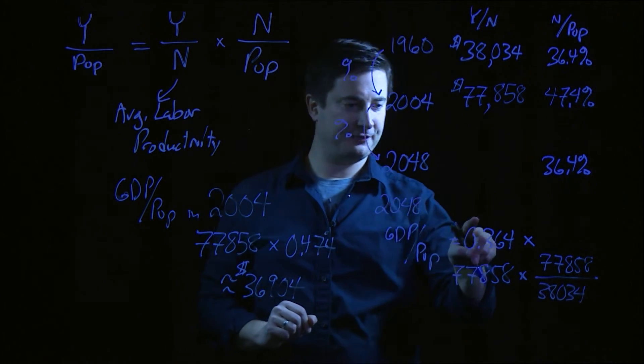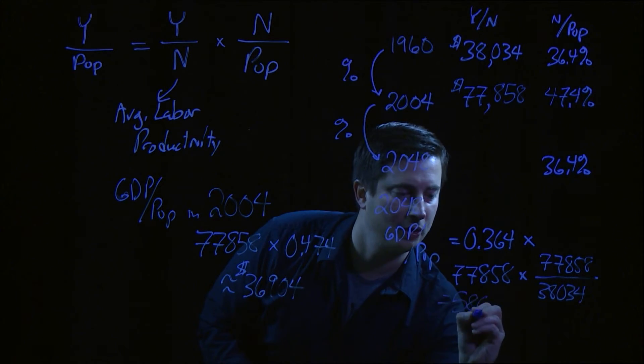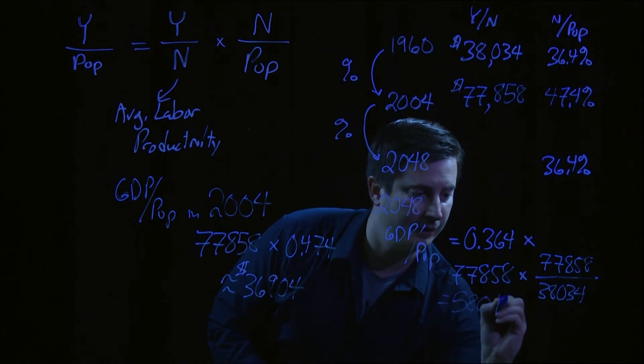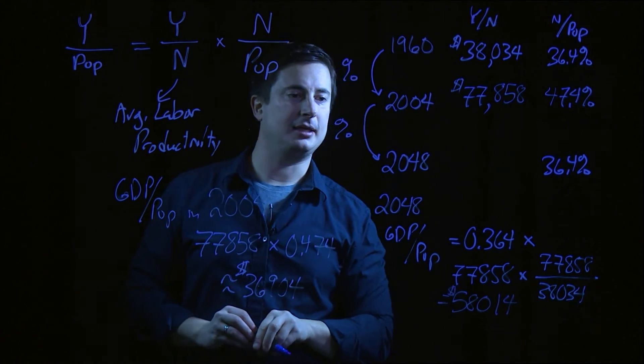That gives us, if you just do the simple math, at the end of the day, $58,014 as GDP per capita in 2048.